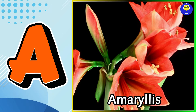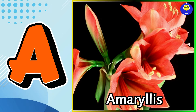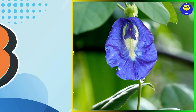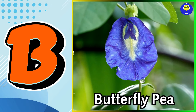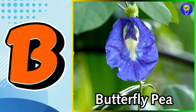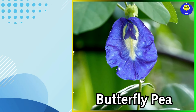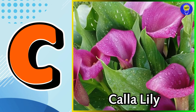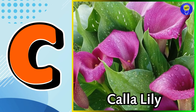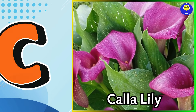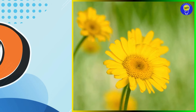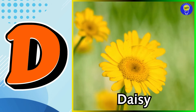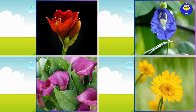A is for Amaryllis flower. Amaryllis flower. B is for Butterfly Pea flower. Butterfly Pea flower. C is for Calla Lily flower. Calla Lily flower. D is for Daisy flower. Daisy flower.